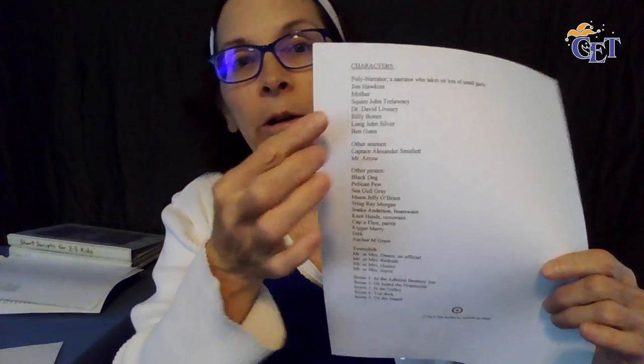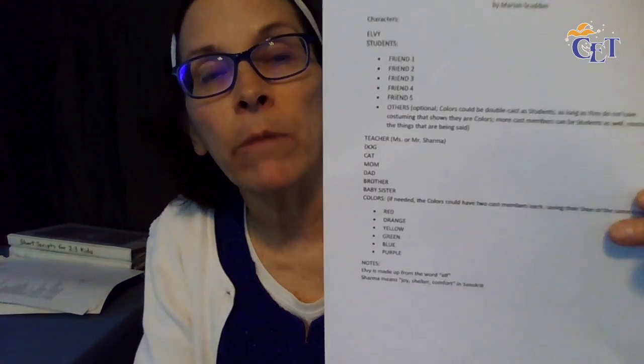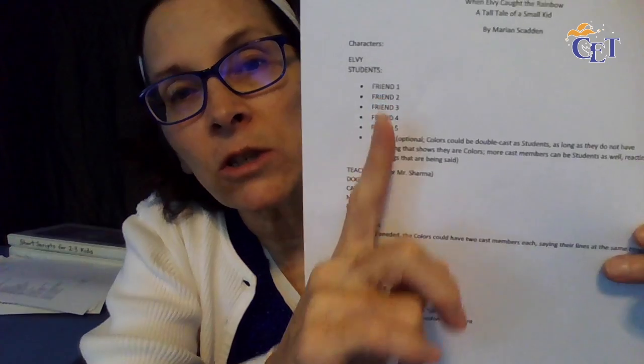This one I also did differently: I put the word CHARACTERS all in caps and underlined it, then I put the characters all in lowercase. So as long as you're consistent with what you do, you're fine. When I did When Elvie Caught the Rainbow, I wanted to easily see the students from the rest, so I've got Elvie, then I have students, then I have teacher — and teacher has a name. Then these are the colors, which are named characters in this particular play.